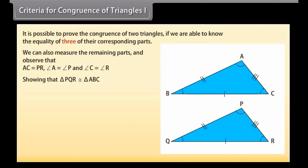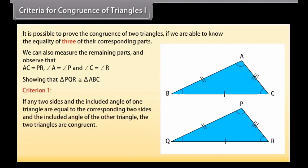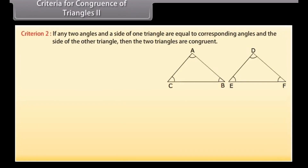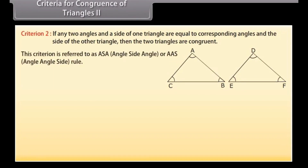Thus we have Criterion 1: if any two sides and the included angle of one triangle are equal to the corresponding two sides and the included angle of the other triangle, the two triangles are congruent. This criterion is referred to as SAS — side-angle-side rule. The next criterion is that if any two angles and the included side of one triangle are equal to the corresponding angles and side of the other triangle, then the two triangles are congruent. This criterion is referred to as ASA — angle-side-angle, or AAS — angle-angle-side rule.